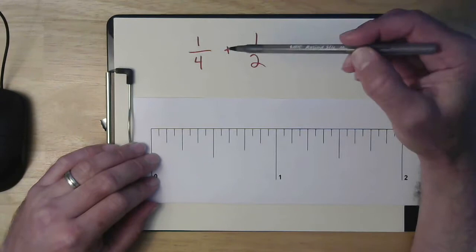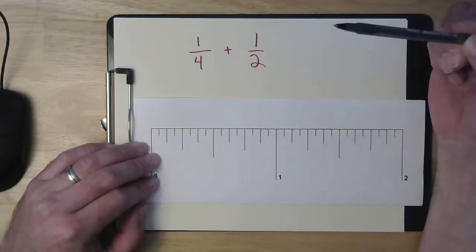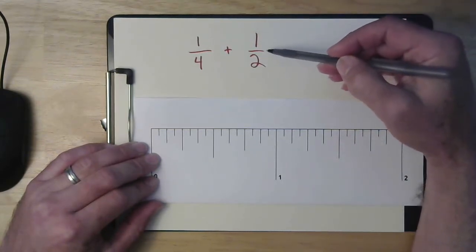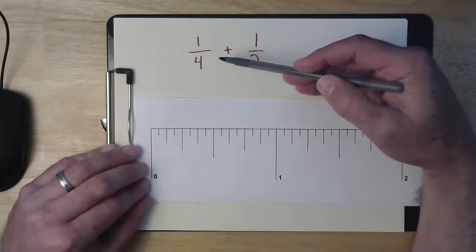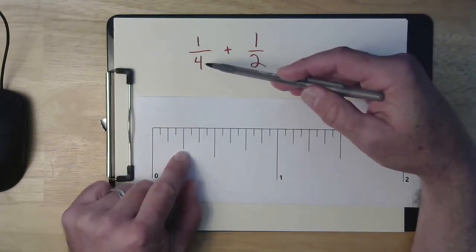So I'm going to show you a really quick one here. So what if we were to do the problem one-fourth plus one-half? You probably know what the answer to that is but I just want to use that to show you this method. So what I do is find a fourth. So here's a half. That means that's a fourth.